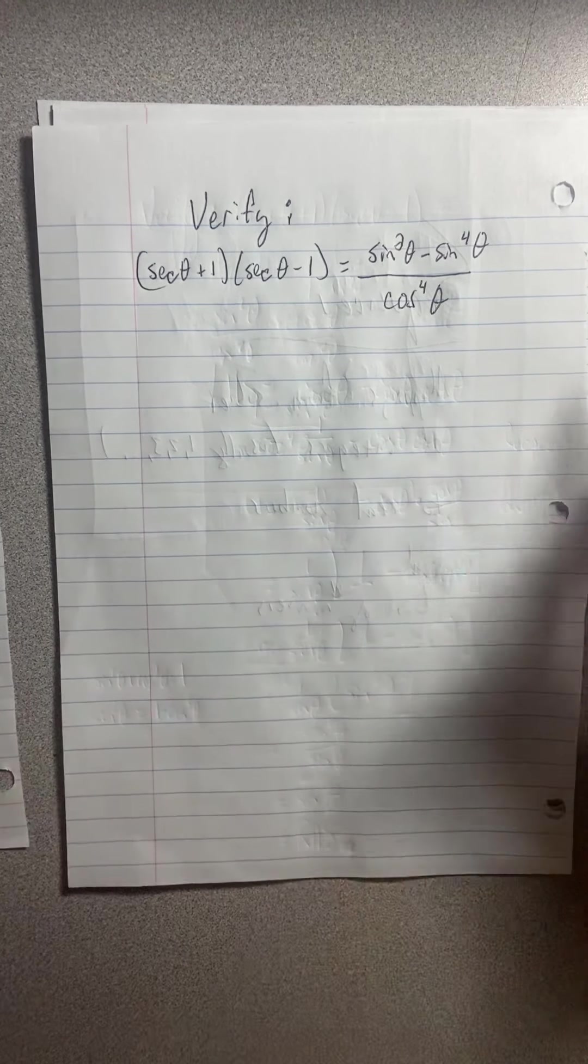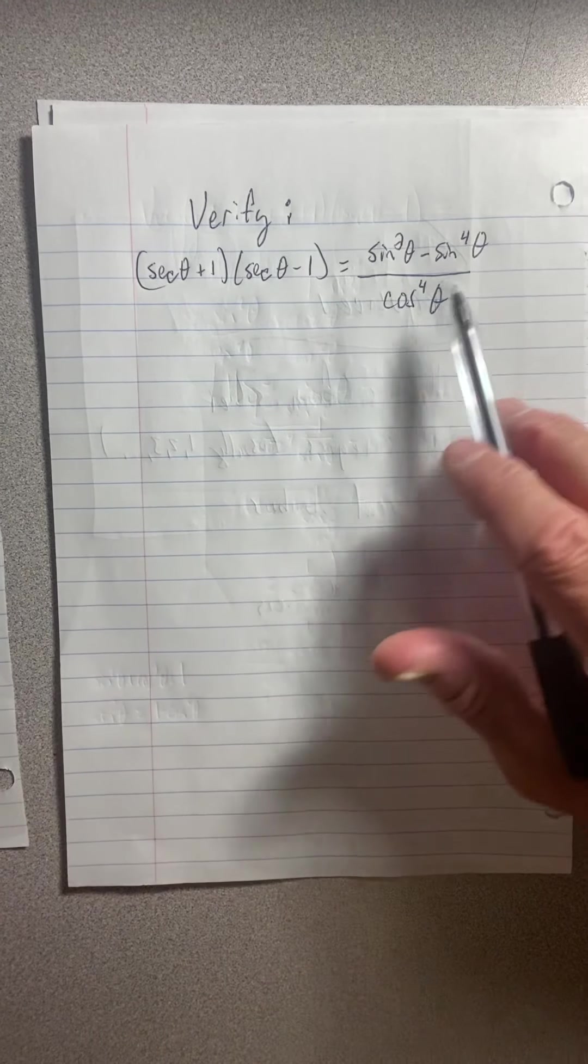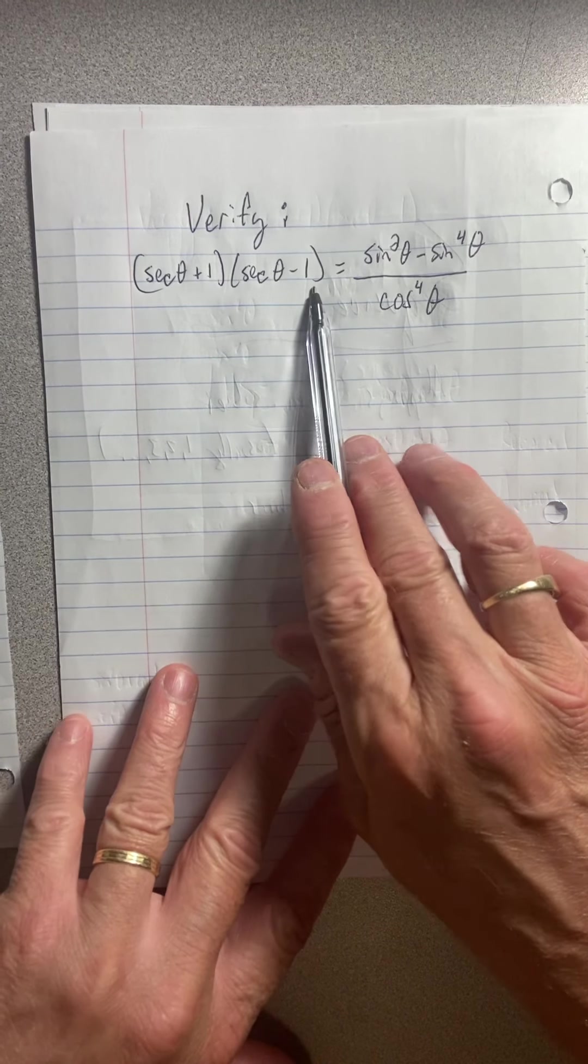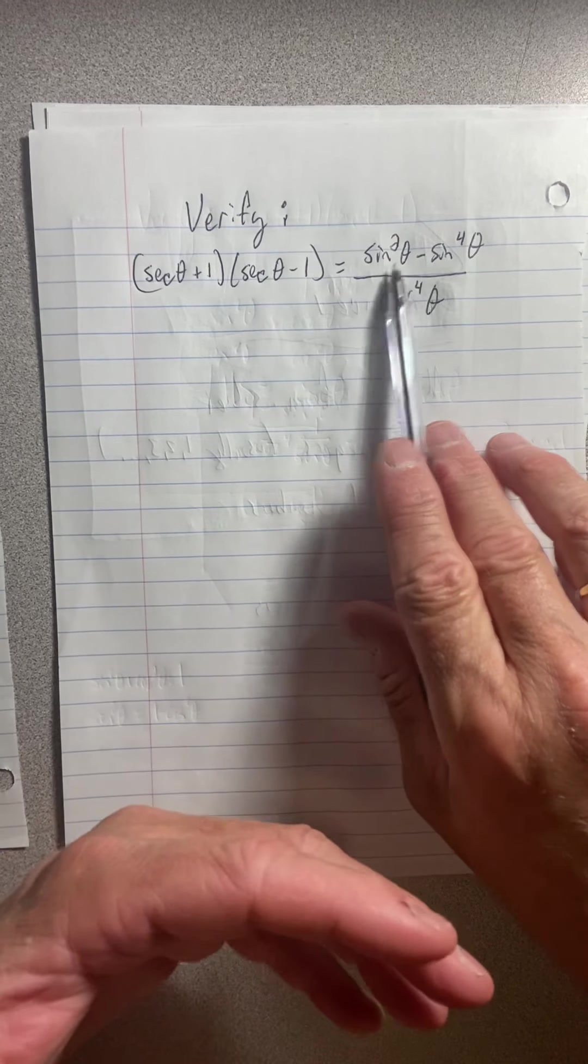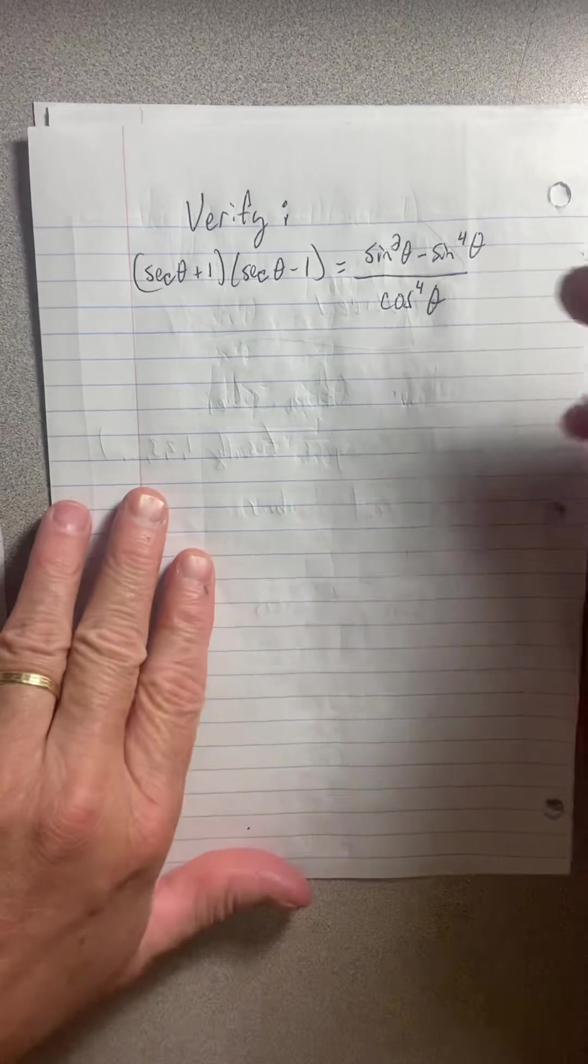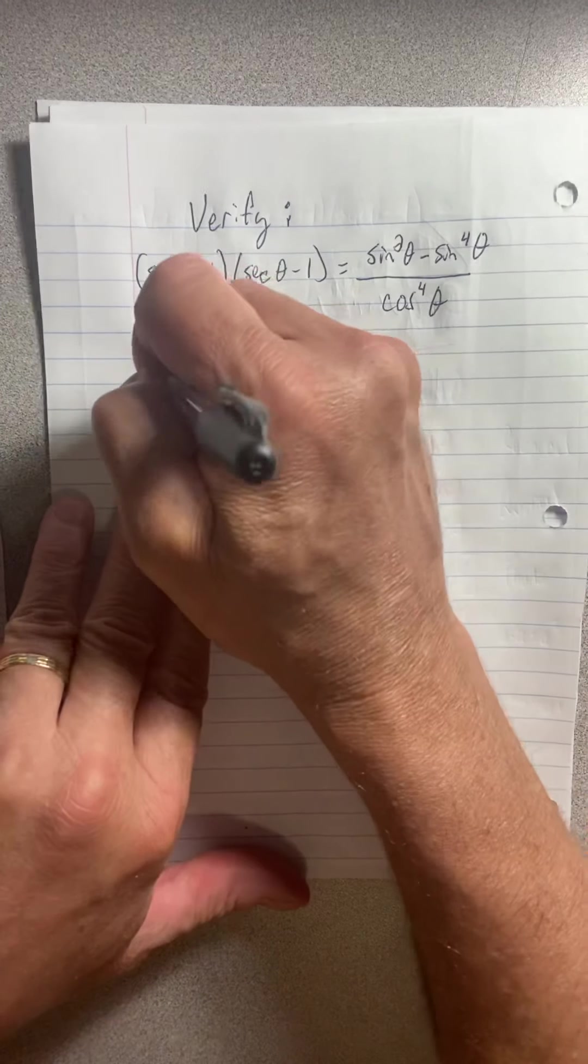So this one's kind of hard to choose which side to mess around with because here we have just two terms. Over here we really just have two terms. So I'm not sure what's best to start with. I might start with the right-hand side this time.